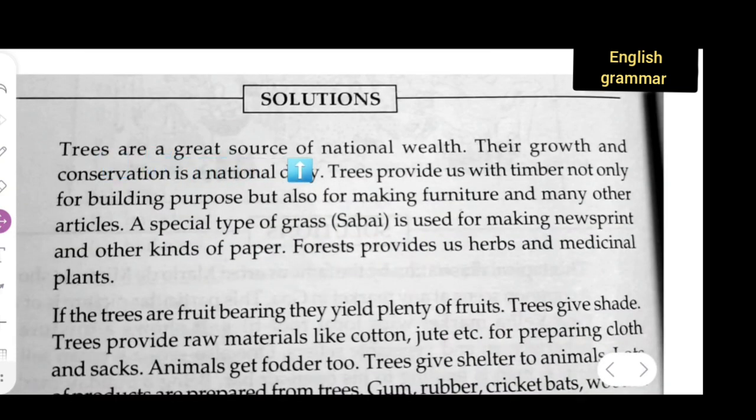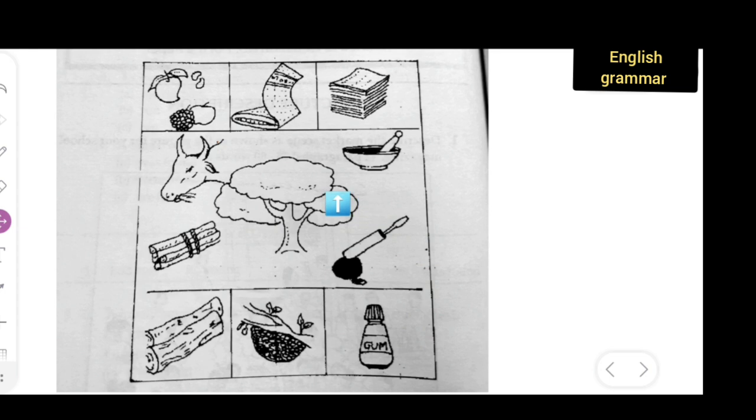Trees are a great source of national wealth. Their growth and conservation is a national duty. Trees provide us with timber, not only for building purpose but also for making furniture. This tree provides us timber and it helps us for what?